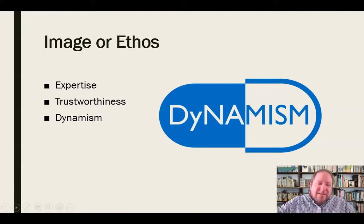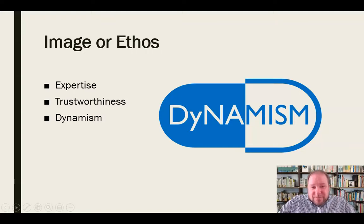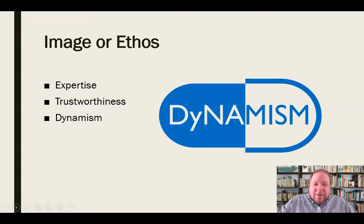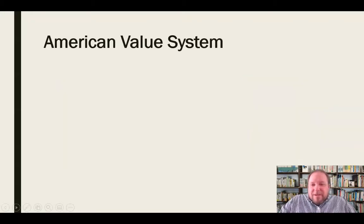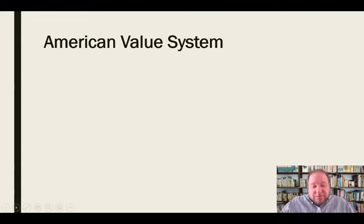These elements of image and ethos — expertise, trustworthiness, and dynamism — are individually very powerful persuasive tools, and collectively they are really strong. We should consider our image and ethos and how that affects the willingness of people in our culture to accept what we're saying.